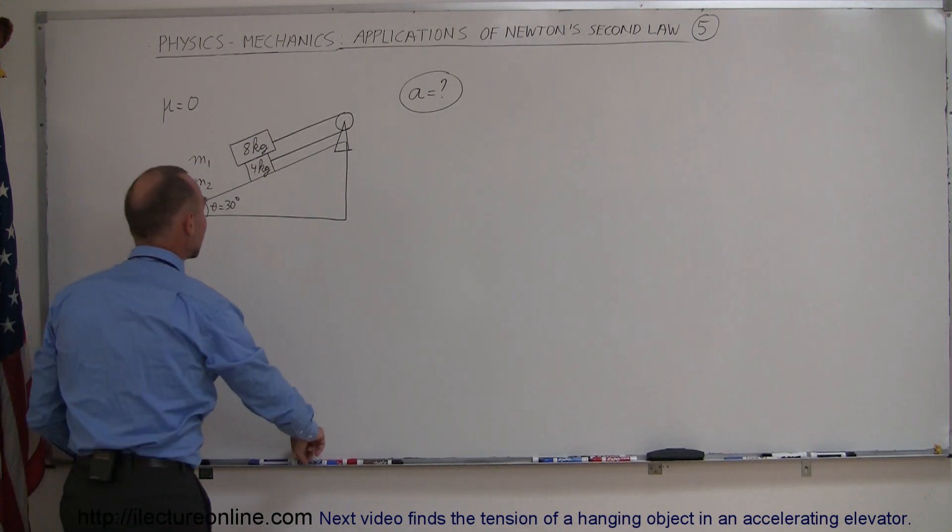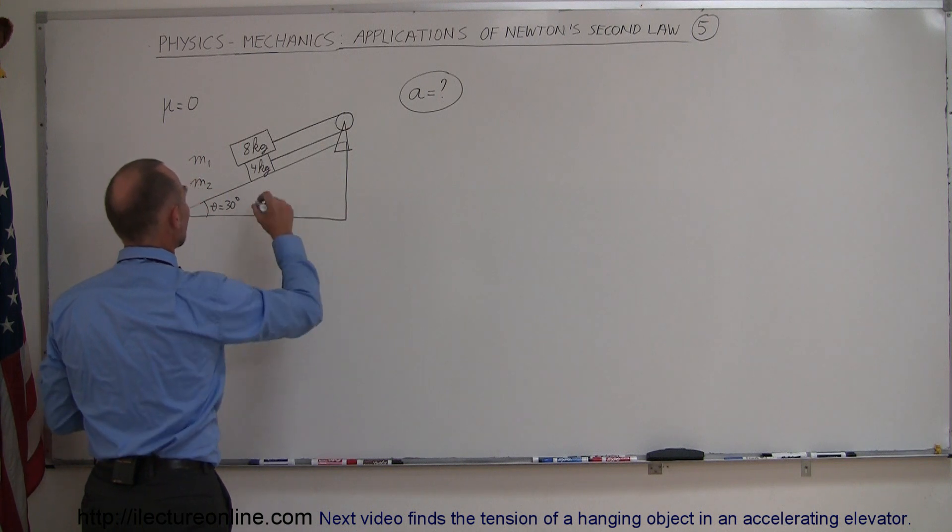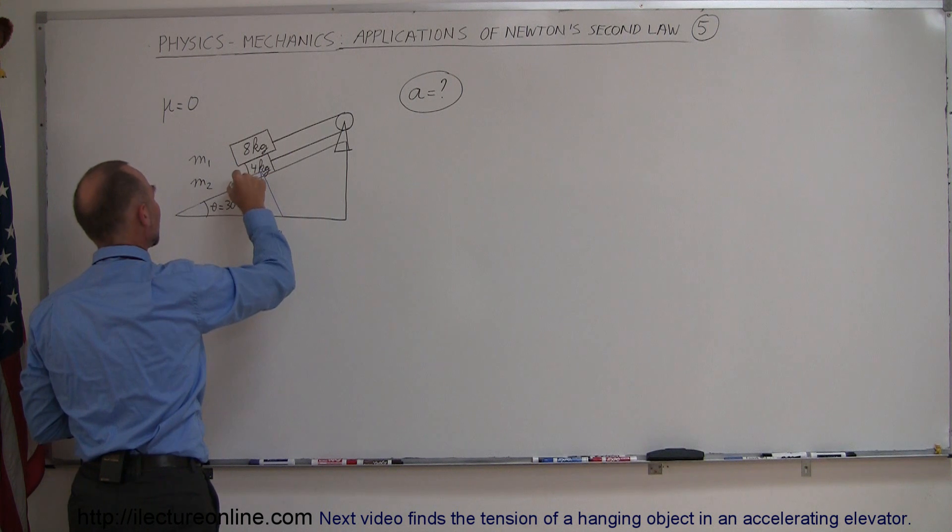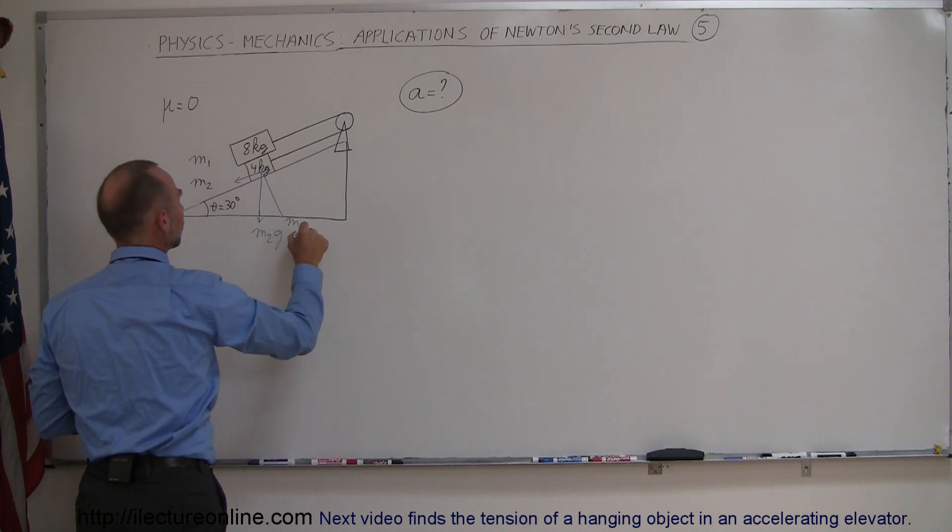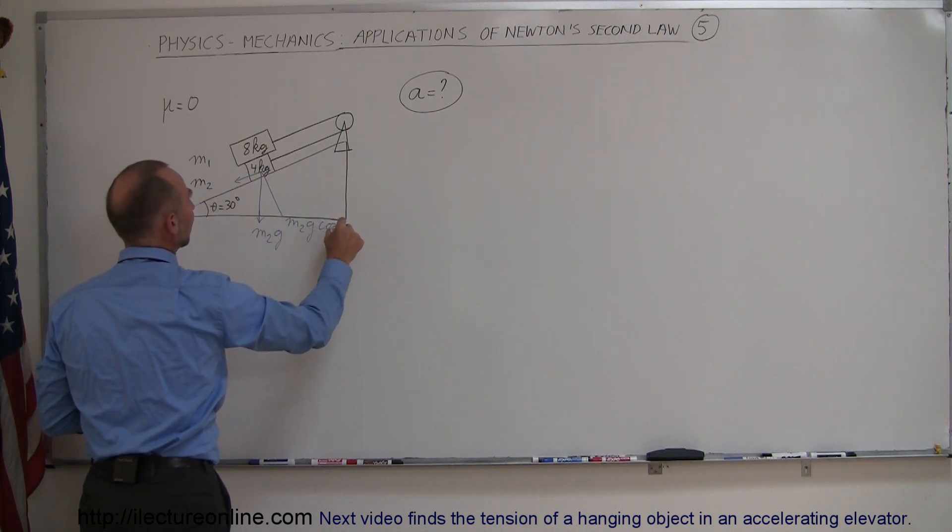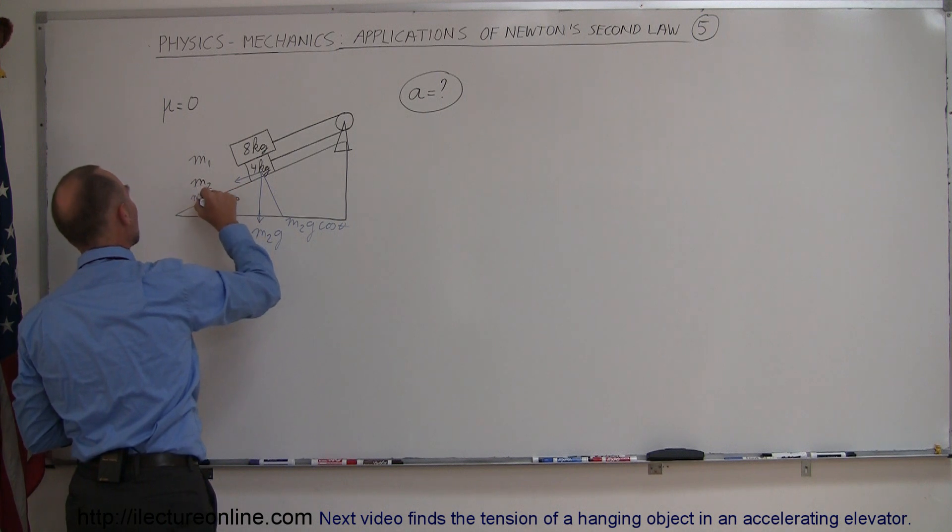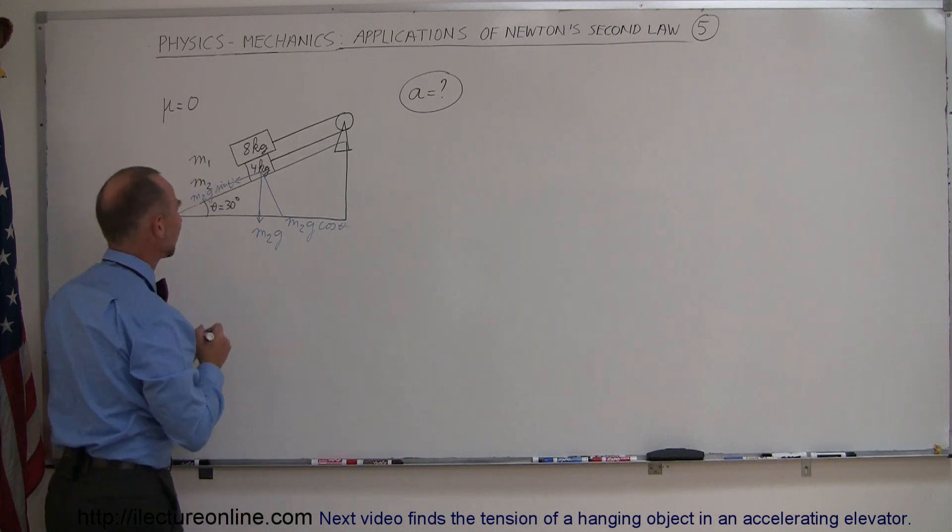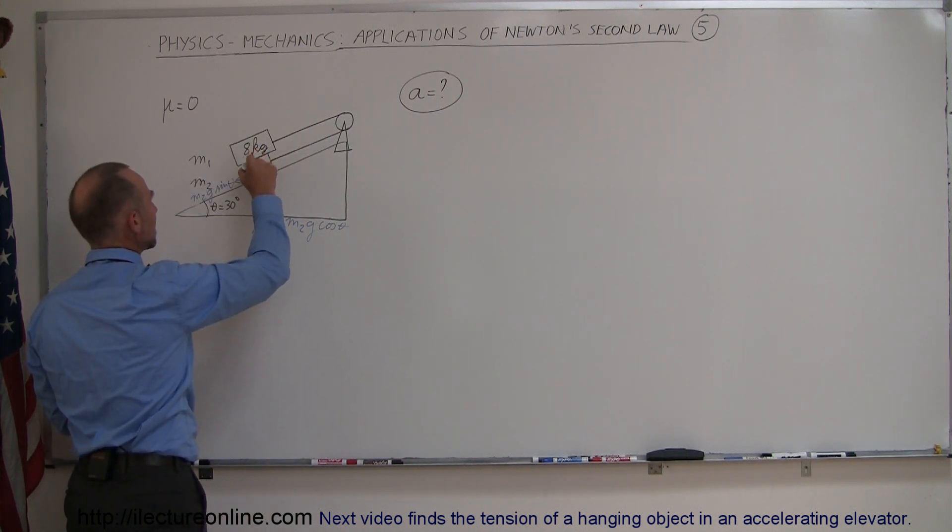We can kind of work that out by putting some forces in here, so here we have the weight of the second mass, this is m2g and here are the perpendicular components and the parallel components of m2g, so this would be m2g times the cosine of theta and here this would be m2g times the sine of theta. I'll use a different color for the second mass, otherwise it gets a little messy here.